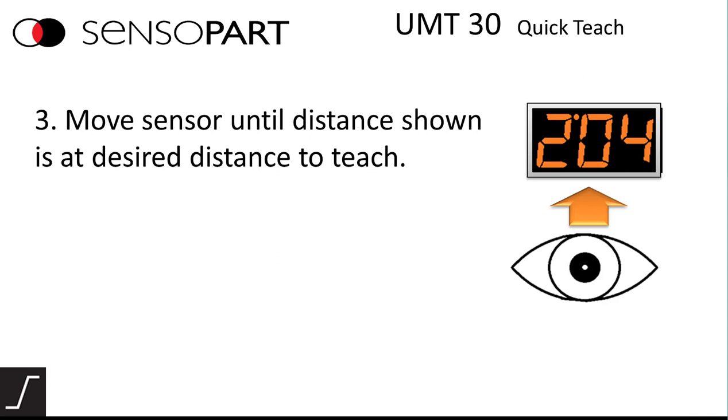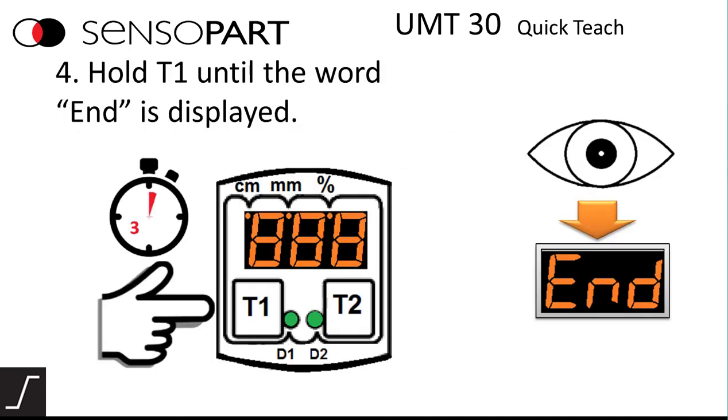Then you move the sensor away to the next desired distance and then you hold T1 for more than three seconds again until it displays end.